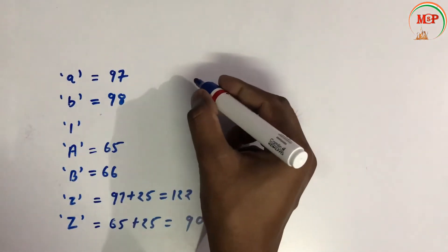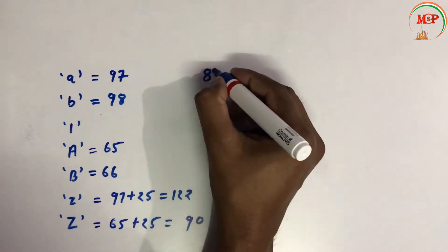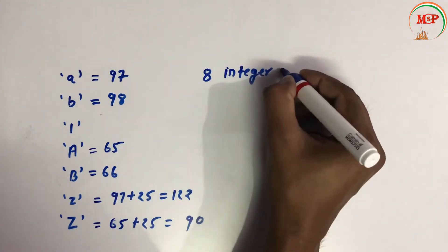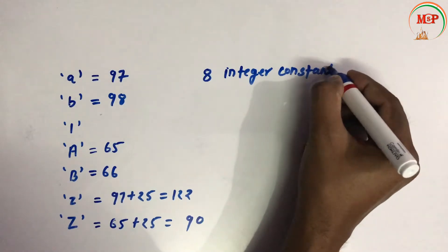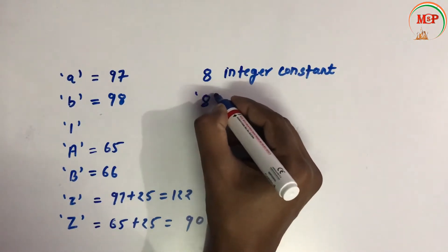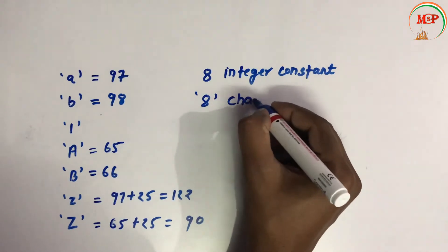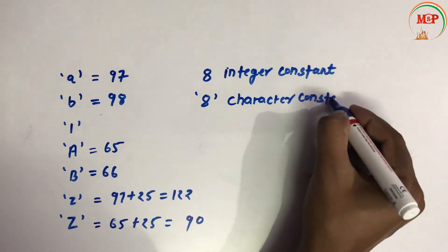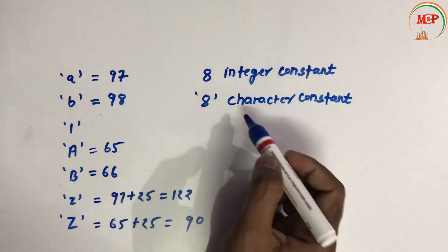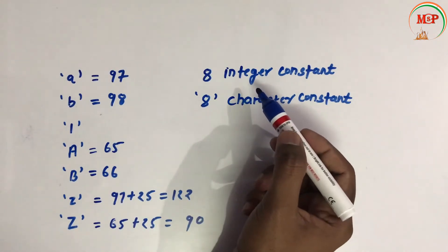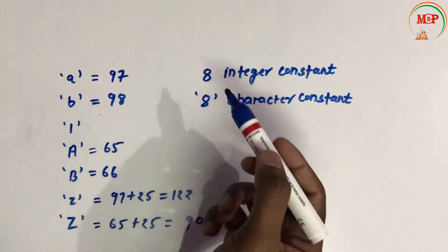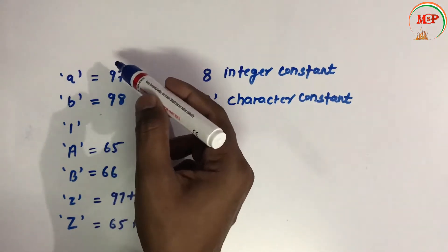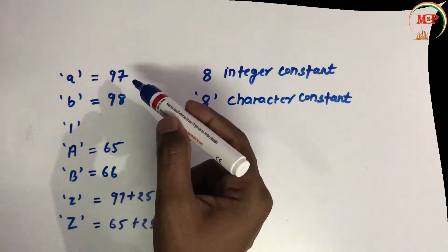So these are examples of character constants. Note that if I write 8, that is an integer constant, but if I write '8' in single inverted commas, that becomes a character constant. That is the difference between integer constant and character constant.